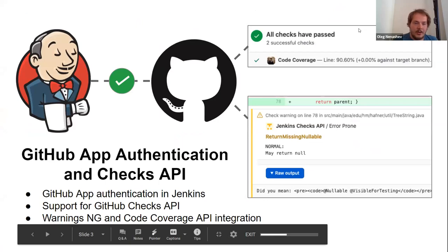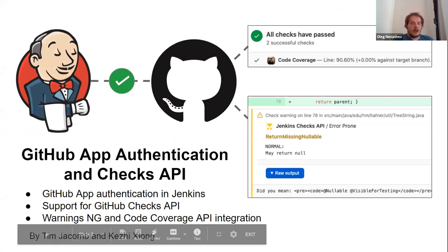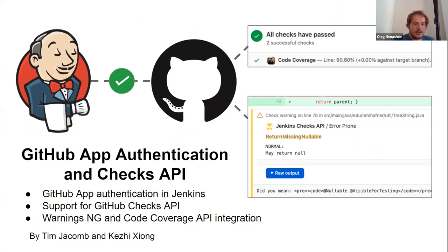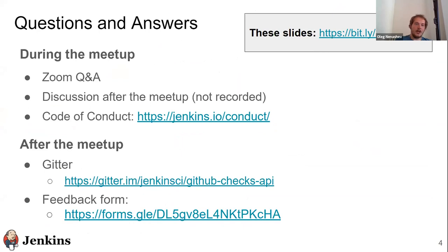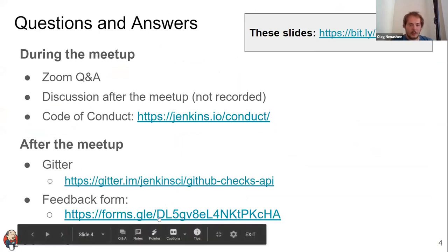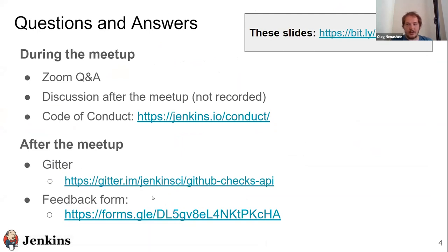Today we have a presentation about modern GitHub integrations — how you can authenticate Jenkins to GitHub using GitHub App authentication, and then we'll talk about the GitHub Checks API and support for reporting static analysis and code coverage reports. If you have any questions during the presentation, please ask them using Zoom Q&A. You can ask a question at any moment and we'll answer them after the presentation.